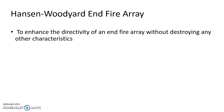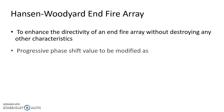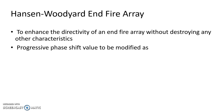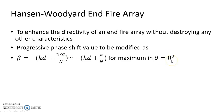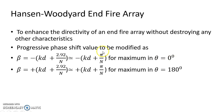The main purpose of designing the Hansen-Woodyard Endfire Array is to enhance the directivity without destroying any other characteristics. Looking at the modified progressive phase shift value: earlier we considered beta as minus kd for 0 degrees in an Ordinary Endfire Array. Here, a parameter 2.92/n has been added to that equation for maximum along 0 degrees, and the same value with a positive sign is used for 180 degrees.